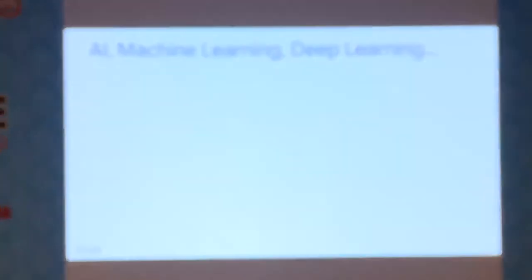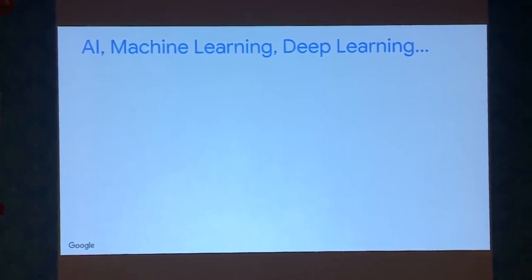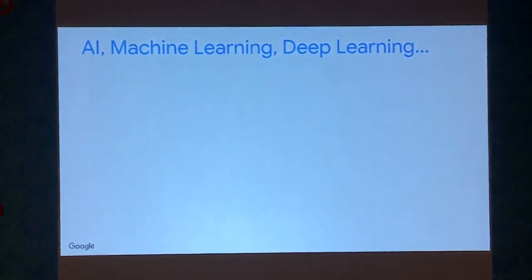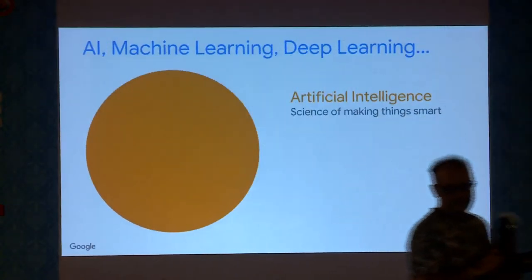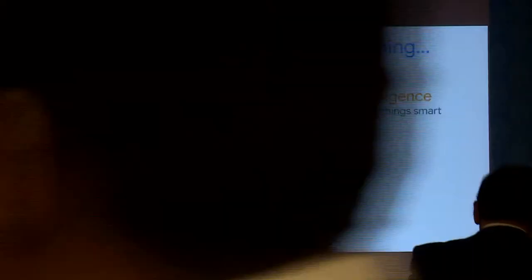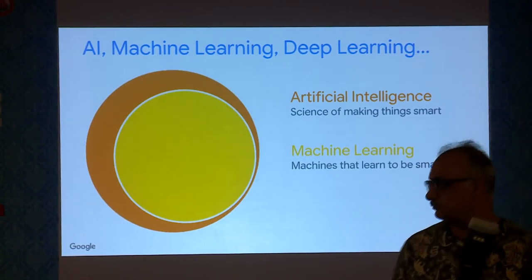Before talking about deep learning, there are other similar words people use interchangeably: artificial intelligence, machine learning, and deep learning. Artificial intelligence is a system which can do smart things — for example, if we show a picture of either a dog or a cat, and the system can tell whether that's a dog or cat, that's artificial intelligence. One way to achieve it is to build a system which can learn from examples, and we call that machine learning.